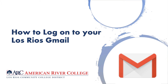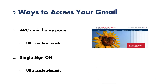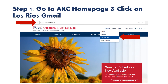With access to Gmail, you will be able to read any important emails from ARC. Now, let's get started. There are two ways to access your Gmail. The first one is through the ARC homepage and the second one is through your single sign-on. Let's go ahead and start with going to ARC's homepage.